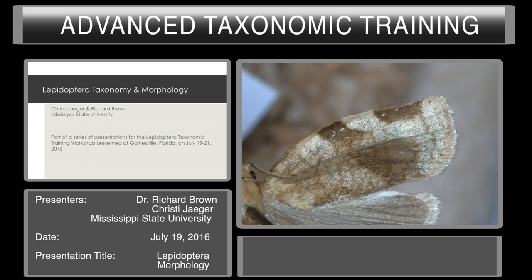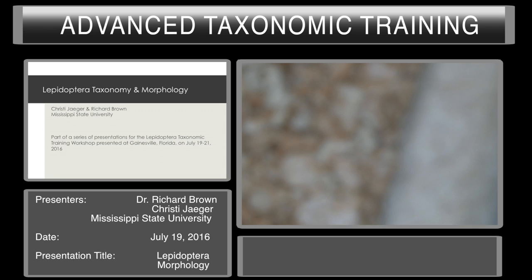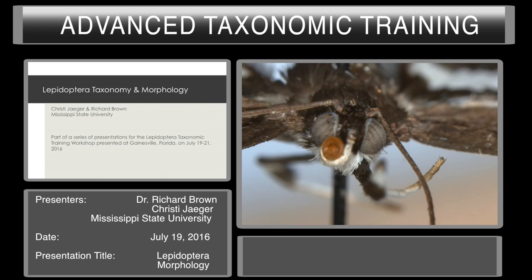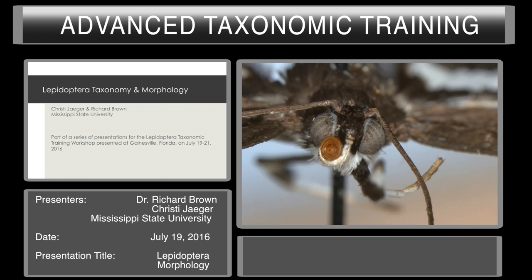Let's go to the next specimen, number four. We're going to look at it from the head end. I'm going to zero in on it. You see the compound eyes, you see the antenna. What other appendage do you see? The proboscis. Is it scaled? A scaled proboscis. So what's the family? Pyraloidea — superfamily. It could be a gelechiid but it's a little bit large for a gelechiid and it lacks some of the other characteristic characters.